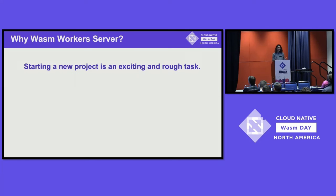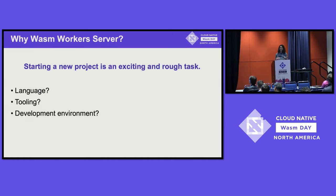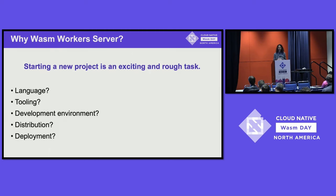To understand why we built it, consider that starting a new project is exciting but rough. You need to decide what language to use, and if you're in a team, coordinate languages, architecture, patterns, frameworks, and tooling. Everyone has preferences on the development environment, so it gets complex to get different developers collaborating with the right tools. You also need to plan how to distribute and deploy the application — decisions that get written in stone at the start and carried throughout the project lifecycle.